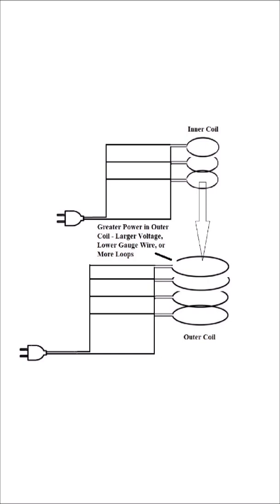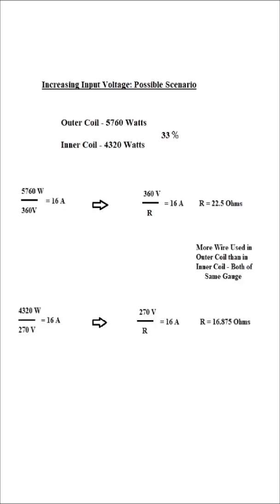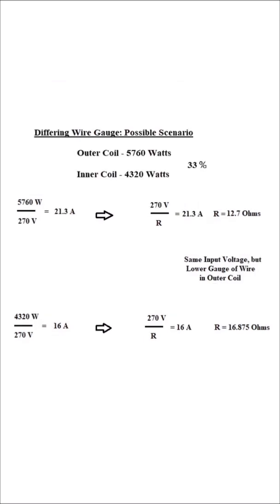At least 33% greater power must be dissipated in the outer coil than in the inner, achieved by activating the outer coil with AC voltage slightly higher than the inner coil or using lower gauge wire in the outer.